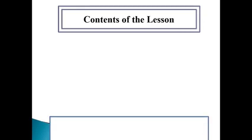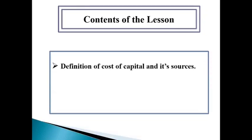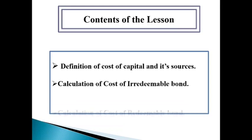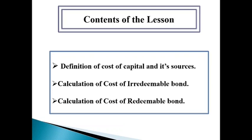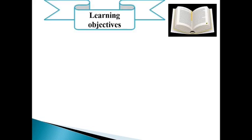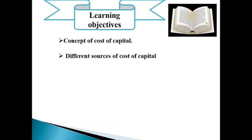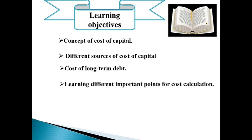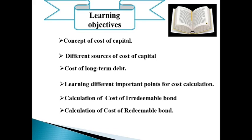Today, we are going to start our lesson with the very beginning chapter of our pre-test syllabus. It is Chapter 7 and the name of this chapter is Cost of Capital, from Finance, Banking and Insurance First Paper Course. I am going to discuss the definition of Cost of Capital and its sources, calculation of cost of irredeemable bond, and calculation of cost of redeemable bond. After completing today's lesson, you will be able to develop a clear concept of Cost of Capital, learn its different sources, develop an idea on cost of long-term debt, and calculate the cost of both irredeemable and redeemable bonds.